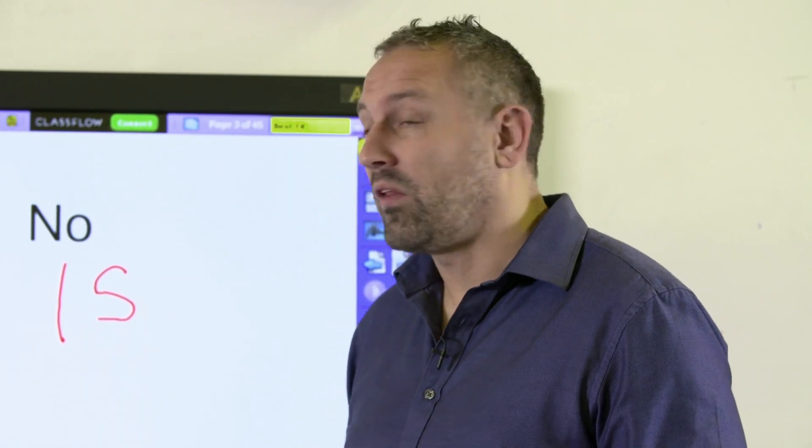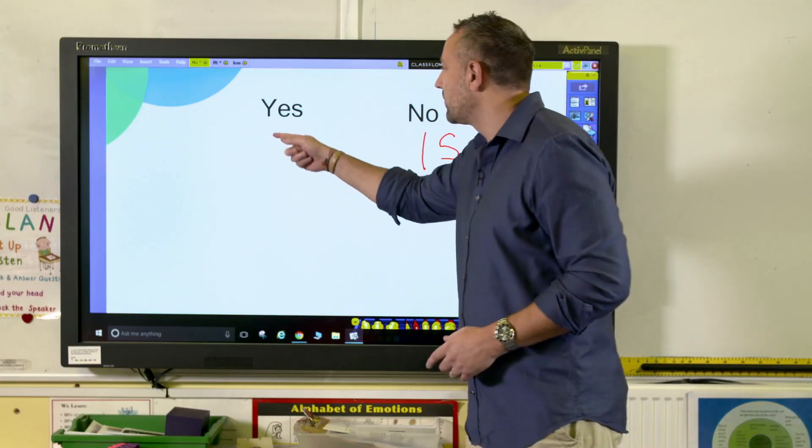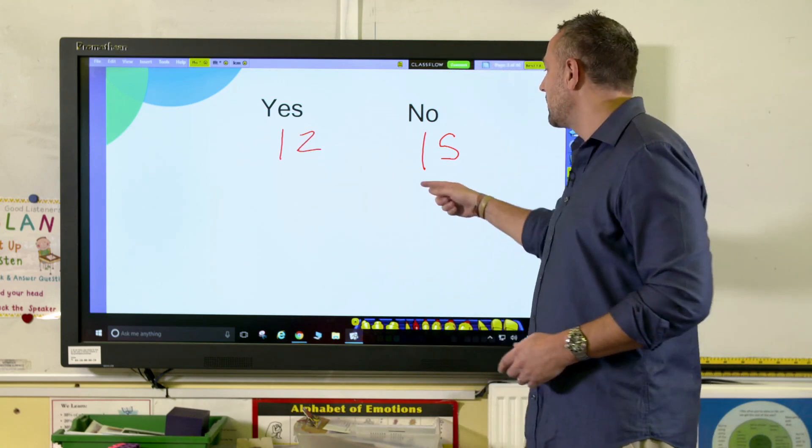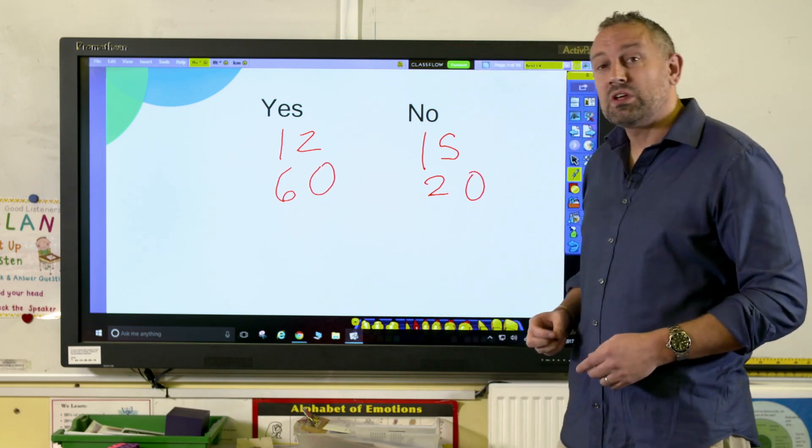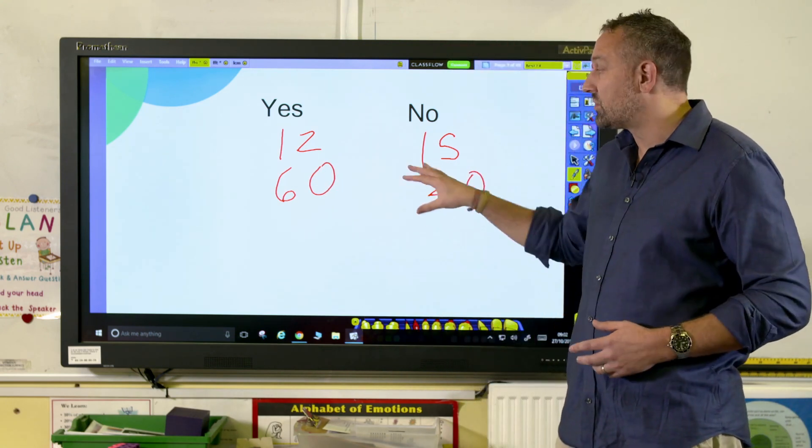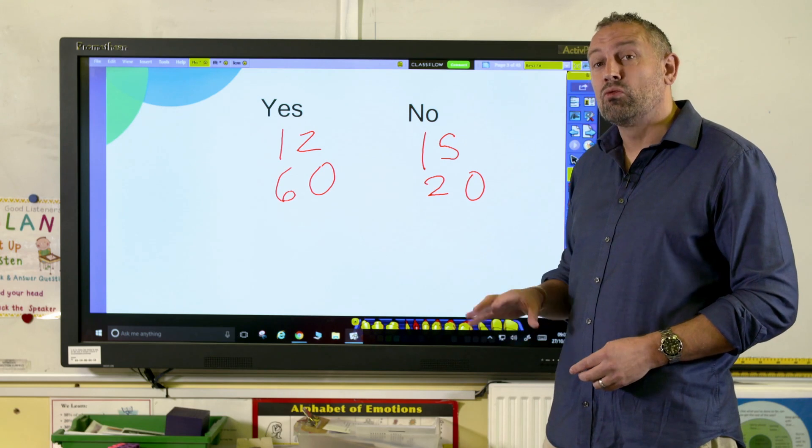So they might say 15 and I'll go no, because I know that's not in the six times table, it's not a multiple of six. Or they might say 12 and I'll say yes. 20, no. 60, yes. And the more numbers you get, the easier it becomes to try and spot a pattern.